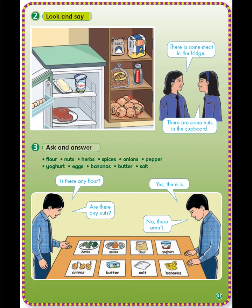2 — Look and say, page 41: There is some meat in the fridge. There are some nuts in the cupboard. 3 — Ask and answer, page 41. Vocabulary: flour — طحين، nuts — مكسرات، herbs — عشب، spices — بهارات، onions — بصل، pepper — فلفل، yoghurt — لبن، egg — بيض، butter — زبدة، salt — ملح. Is there any flour? Yes, there is. Flour is uncountable — اسم غير معدود، يأخذ is. Are there any nuts? No, there aren't. Nuts is countable — اسم معدود، يأخذ are.